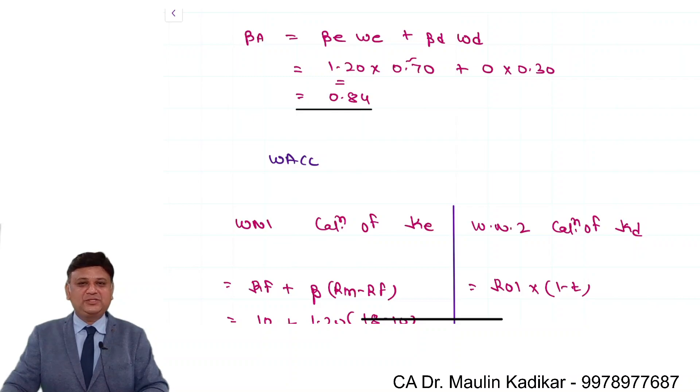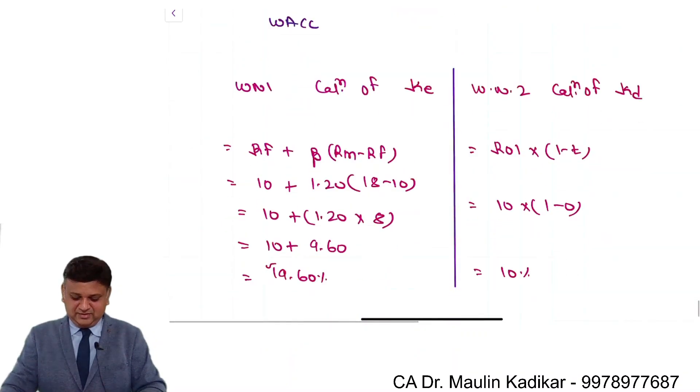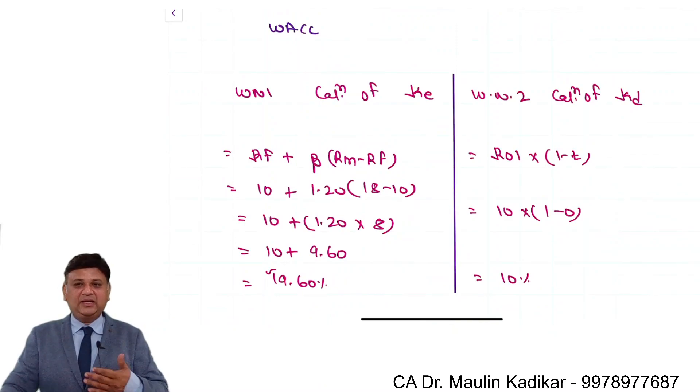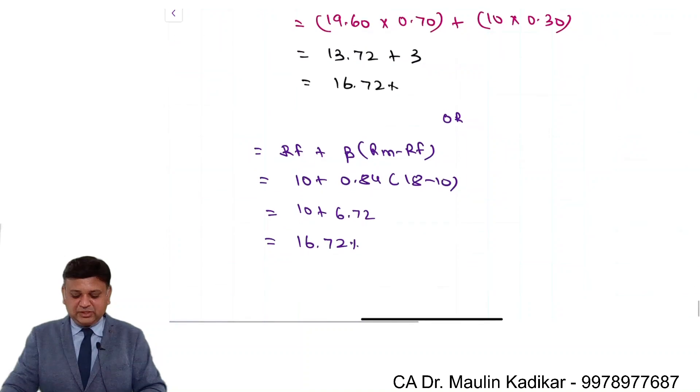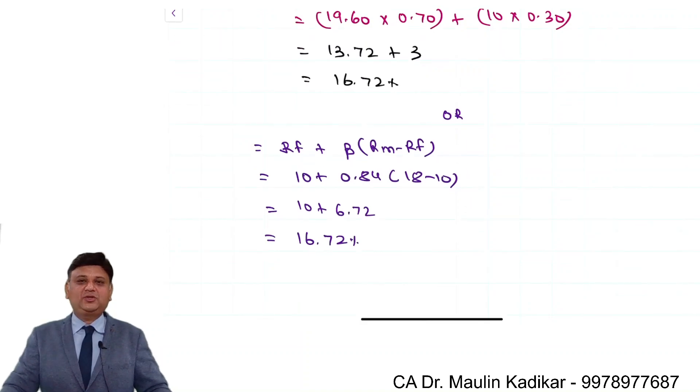So first of all using simple weighted average formula beta of the asset is calculated, then Ke, KD and weighted average cost of capital, or using the beta of the asset weighted average cost of capital can be calculated 0.84.